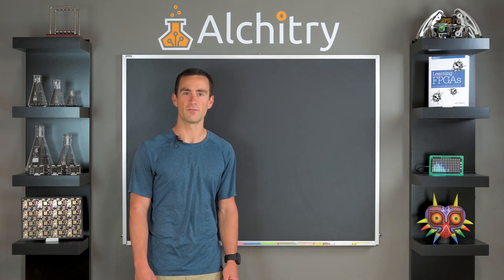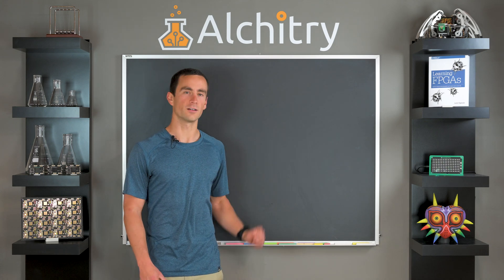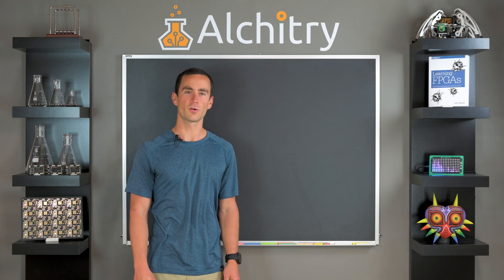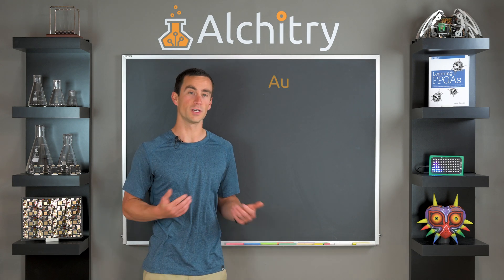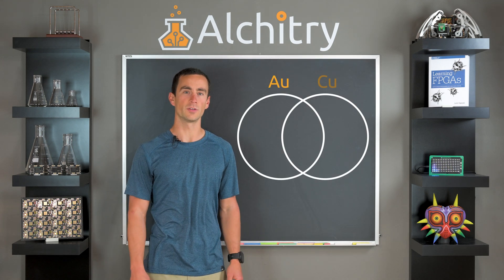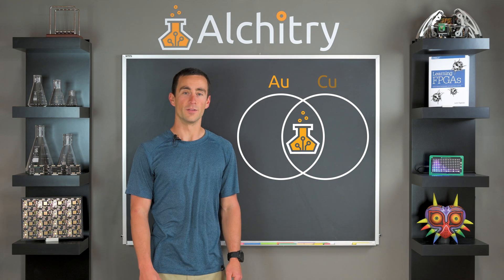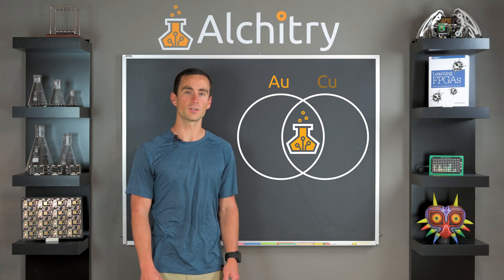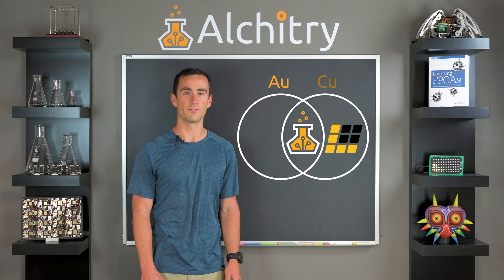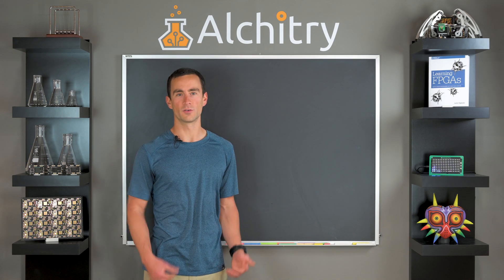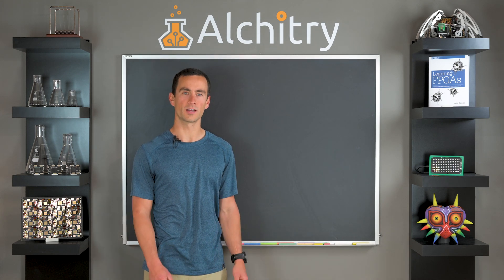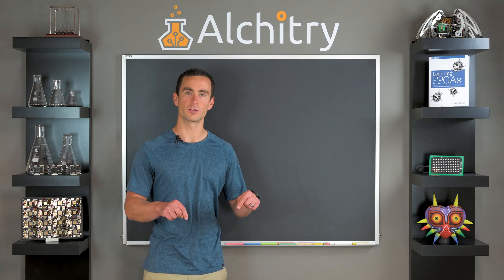If you haven't watched that video yet, I'd recommend clicking here to watch it now. I'm also going to assume that you've installed the necessary software for your FPGA board. For both the Alcatree AU and CU, you will need to have installed Alcatree Labs. For the CU, you will also need to install IceCube 2 from Lattice, and for the AU, you will need to install Vivado from Xilinx. Installing the software can be a bit involved, so we've written tutorials that can guide you through the process. Links are in the video description.